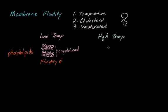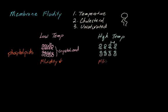What happens at high temperatures? At high temperatures, our phospholipids have a little more energy, so they're going to move around more and create greater distance between each other. The distance between phospholipids is now much greater than at low temperatures. This increased distance allows fluidity to increase because there's much more room for the cell membrane to move around. So as temperature increases, membrane fluidity also increases.